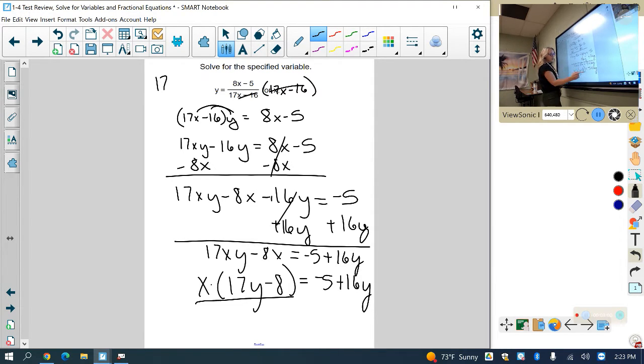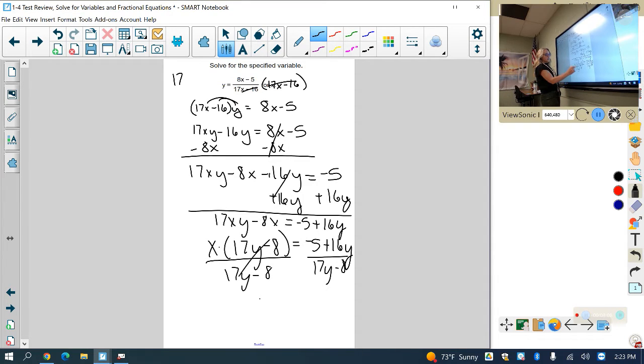this whole entire part here. So 17y minus 8 divided by 17y minus 8. Cancel, so I have x equals negative 5 plus 16y divided by 17y minus 8.